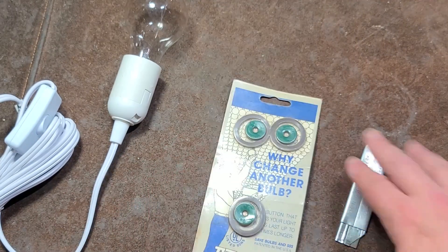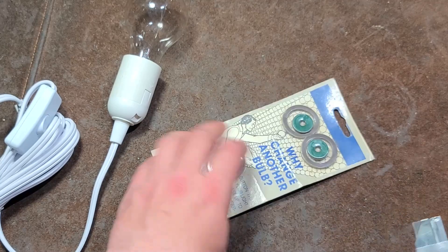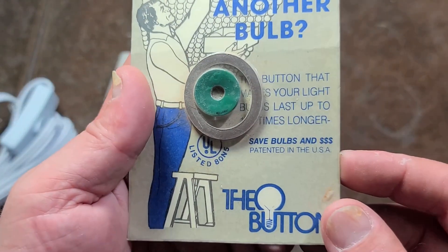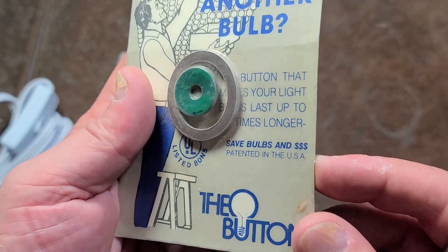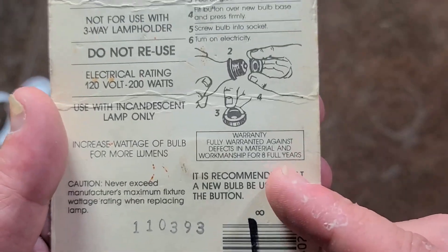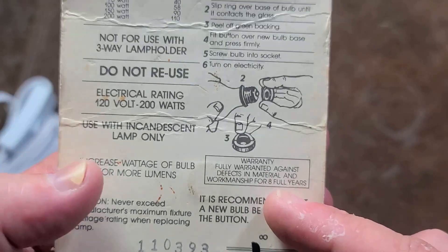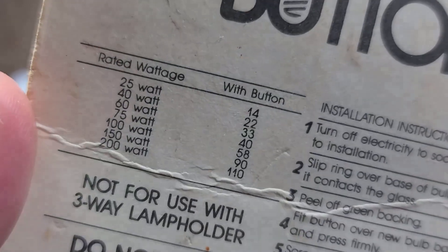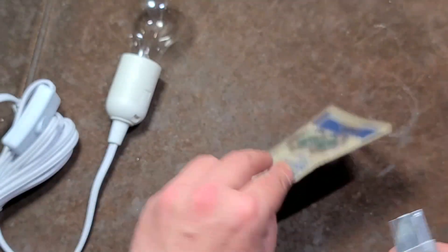What these are is light bulb diodes for incandescent lights. Why change another bulb? Your light makes it last up to 10 times longer, 8 full year warranty. Increase the wattage of the bulb, and then they actually have a chart showing how much it reduces the wattage.